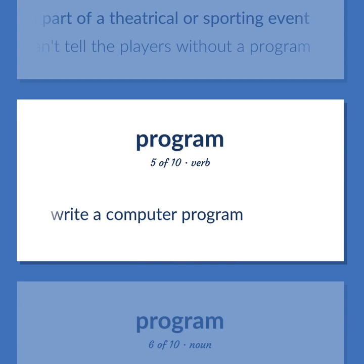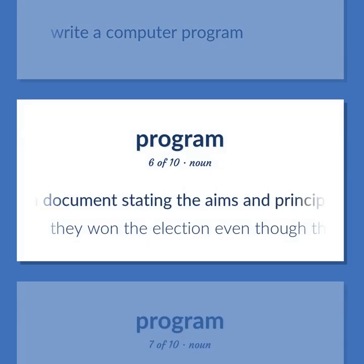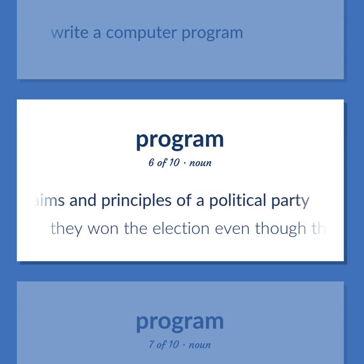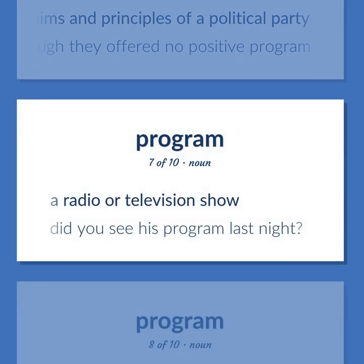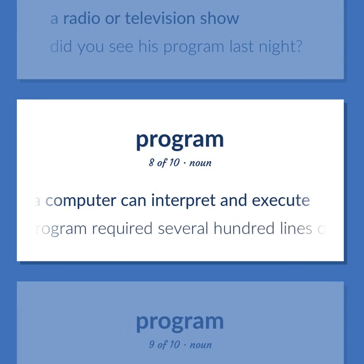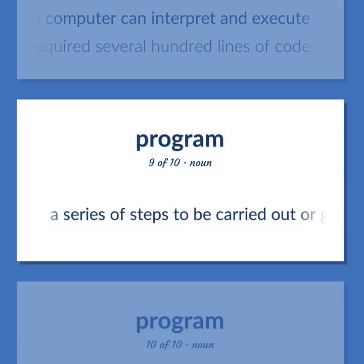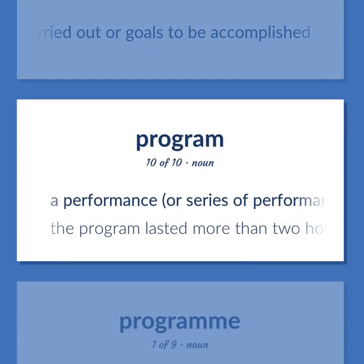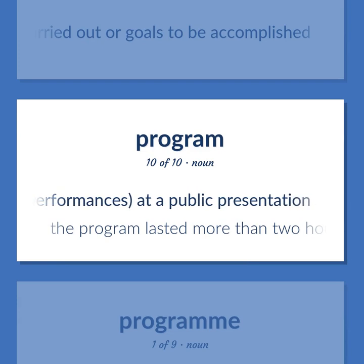Write a computer program. A document stating the aims and principles of a political party — they won the election even though they offered no positive program. A radio or television show — did you see his program last night? Computer science: a sequence of instructions that a computer can interpret and execute — the program required several hundred lines of code. A series of steps to be carried out or goals to be accomplished. A performance, or series of performances, at a public presentation — the program lasted more than two hours.